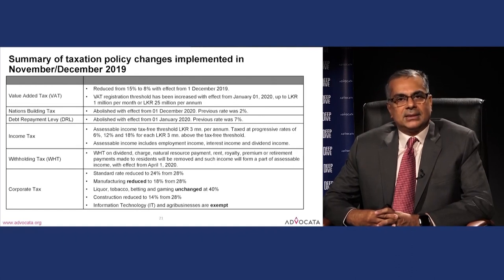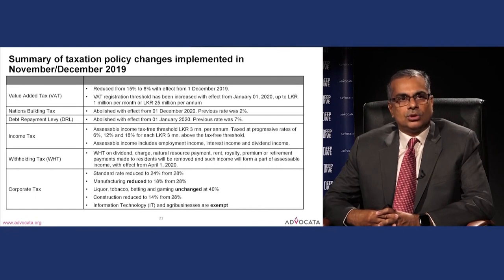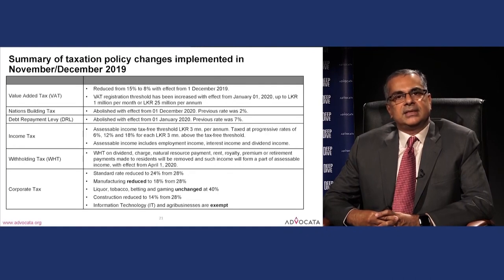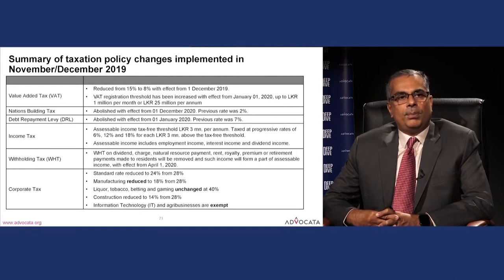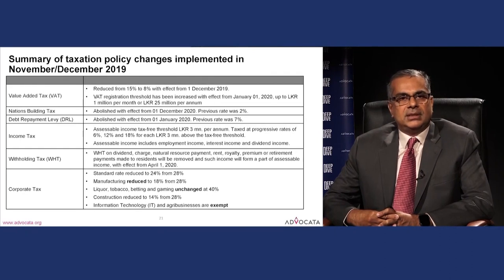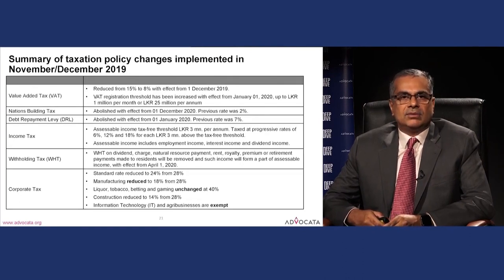As a result, the tax burden on banks, previously close to 52 percent, has come down to around 40 percent. Personal income tax thresholds were increased to 3 million rupees, with all sources of income — including interest — now taxable at three rates: 6, 12, and 18 percent. Withholding taxes were done away with. The corporate tax rate was reduced from 28 to 24 percent, manufacturing to 18 percent, construction from 28 to 14 percent, while IT companies are completely exempt.